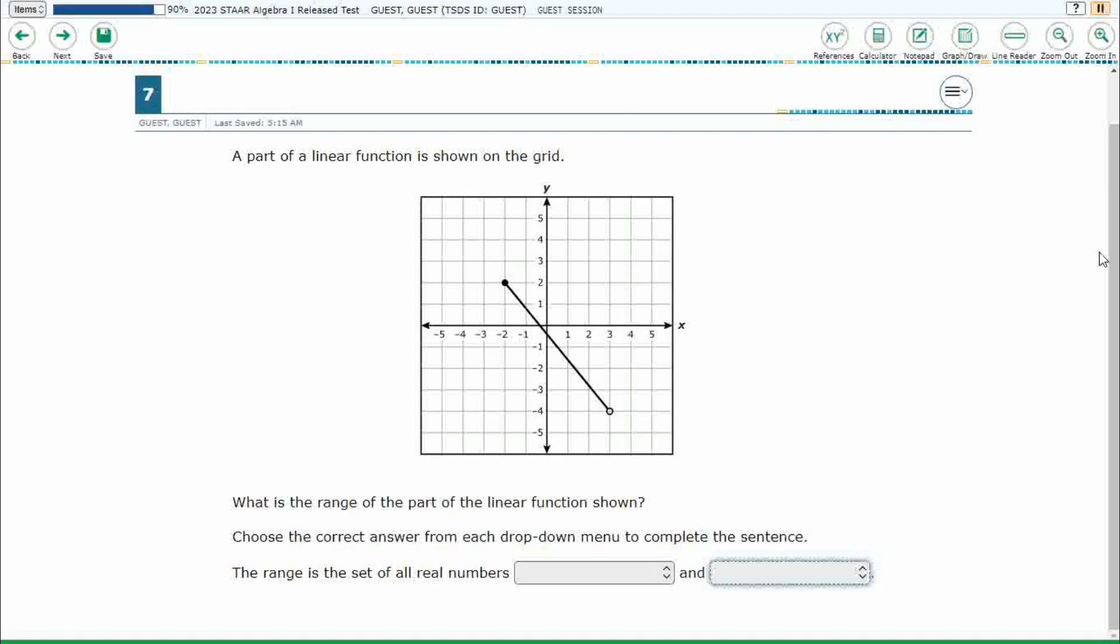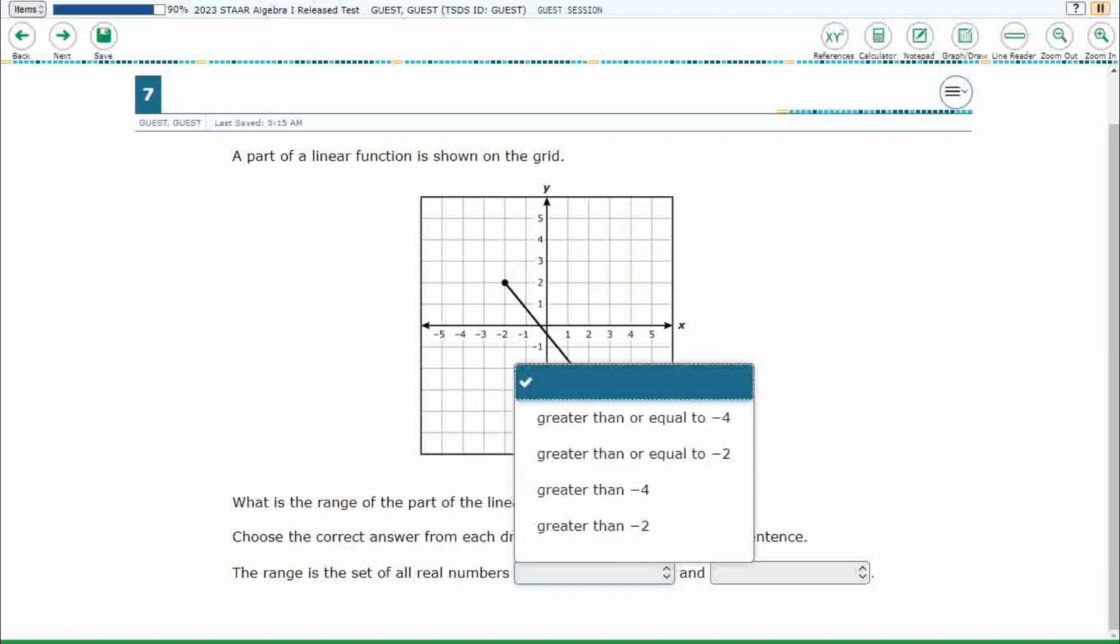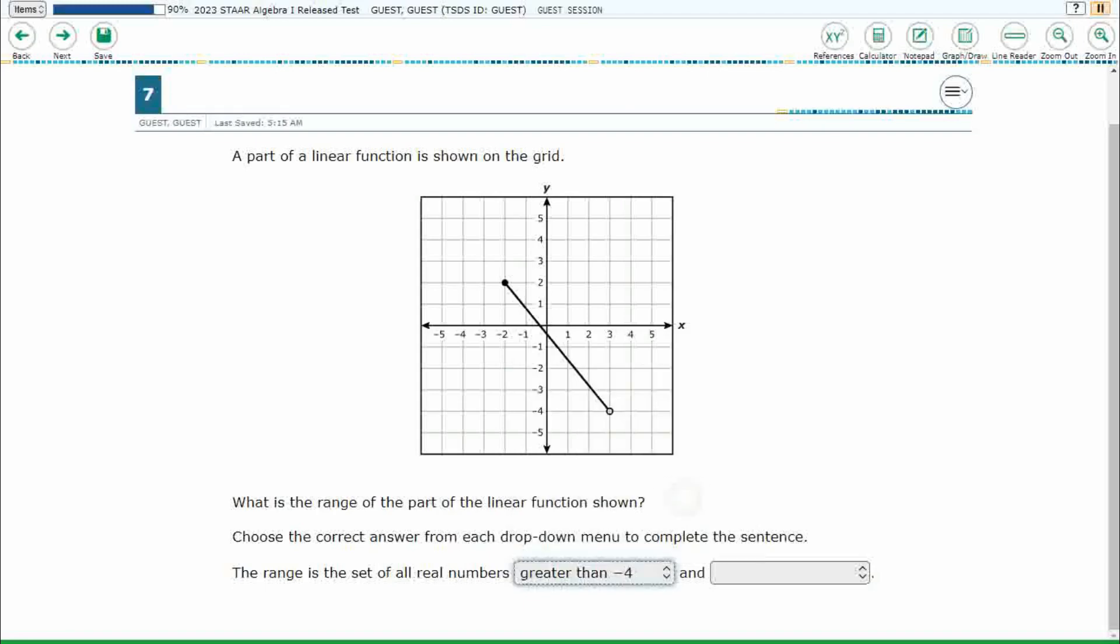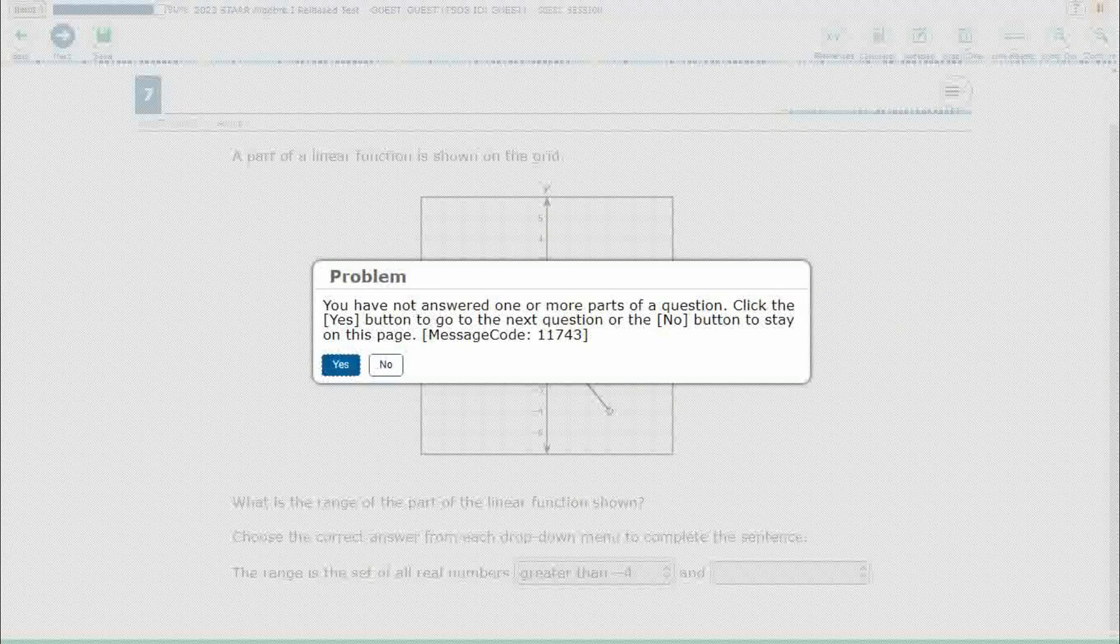We have part of a linear function and we need to find the range. Now the first thing I want us to notice here is that this is a new type of problem called inline choice. What that means is we're going to choose two answers here, and if I just try to choose one, it is going to pop up an error message.